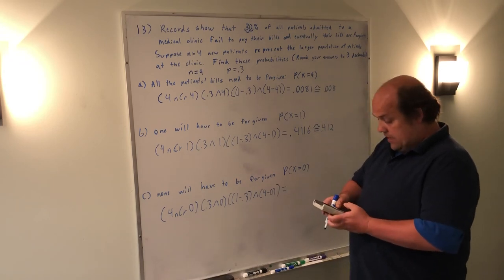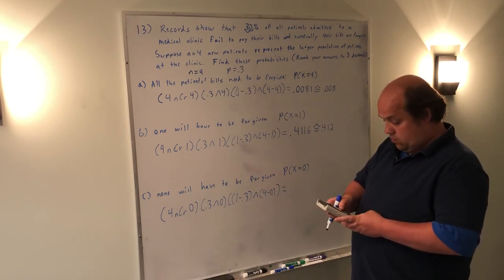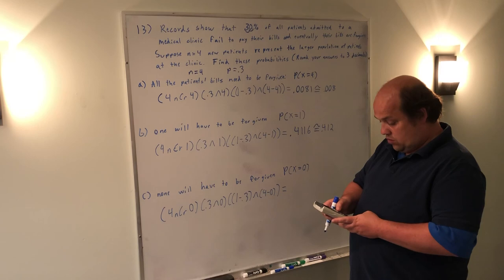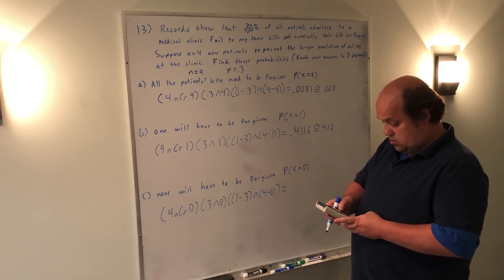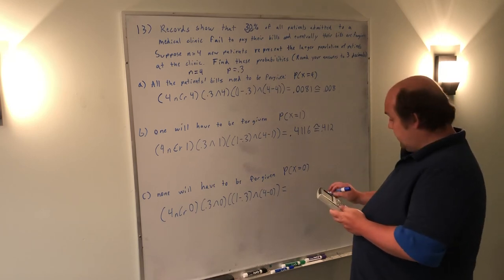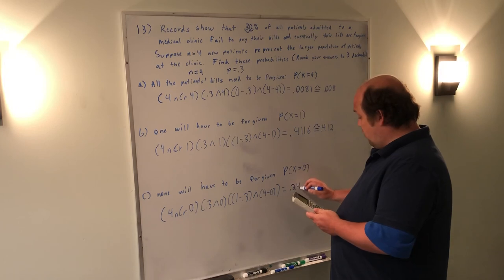When I put that into my calculator, substituting 0 where I had one success before, that gives me a probability of 0.2401.